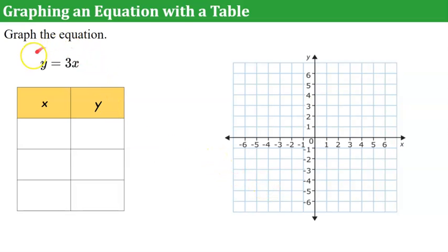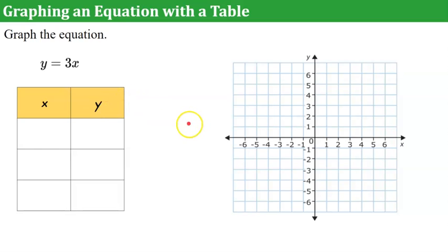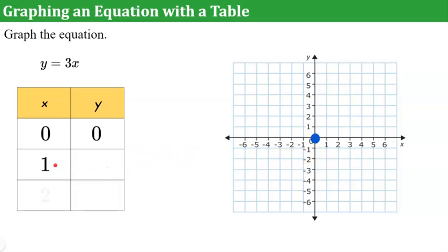We can also use an equation to graph the line. A graph of a direct variation is a line that passes through the origin representing a proportional relationship. Here's one strategy using a table. First, we know the origin is a point on our line because it's a direct variation — it must pass through the origin. So we plot that point and put (0, 0) in our table. Then I'll use the values 1 and 2 as the next easiest numbers. Since a line is infinite, you can use any numbers — fractions, decimals, negatives — you get to pick.